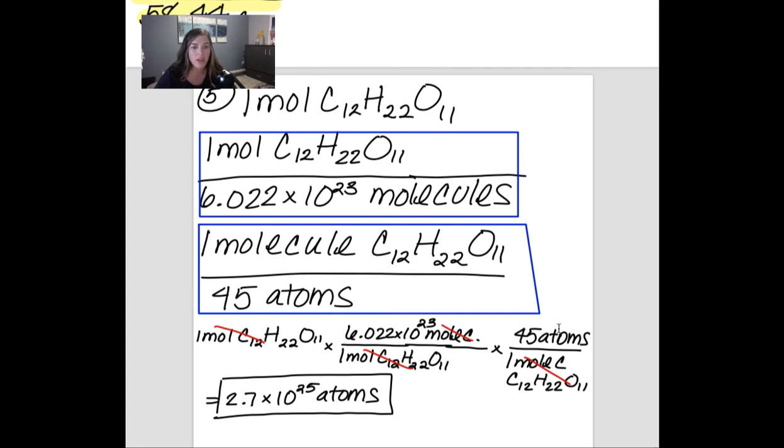And then I have one more step to do. So I want to calculate the number of atoms. So I use this last conversion factor. I put atoms on top because that's what I do want to finally give my answer in. And then molecules do cancel and I'm left with atoms. Okay, I hope that clears up some of that confusion.